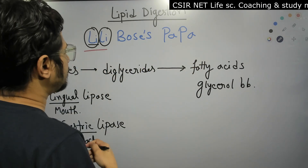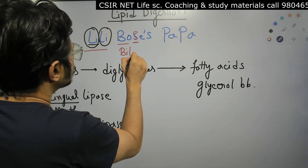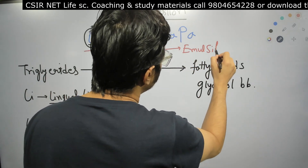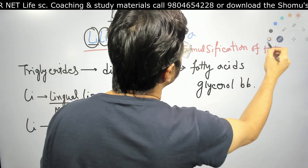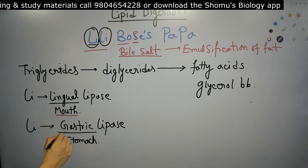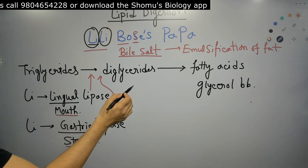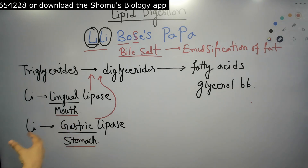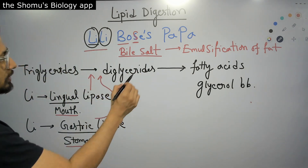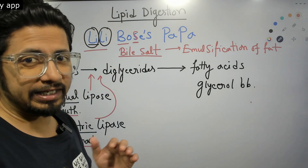Next we have 'Bos' — 'B' and 'S' — which stands for bile salts. Bile salts perform emulsification of fat. Bile salts are released from the gallbladder into the small intestine and emulsify the fat there. Both lingual lipase and gastric lipase convert triglycerides into diglycerides — very little digestion is done in the mouth and stomach. The majority of fat digestion begins in the small intestine.